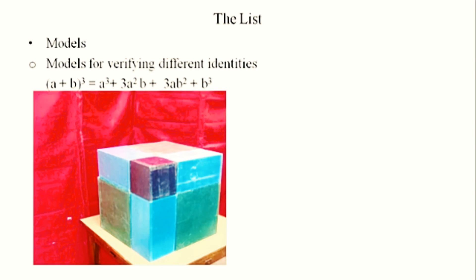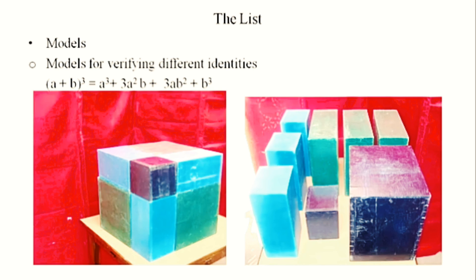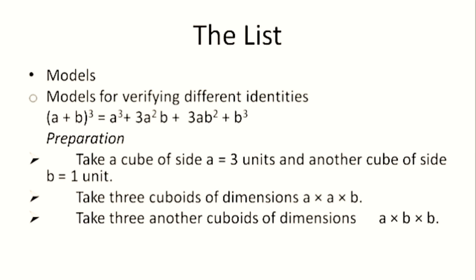We can have a model for (a + b)³ = a³ + 3a²b + 3ab² + b³. The volume of the resulting cube will be (a + b)³. When we bisect this cuboid and find the volume of each part, that gives us the identity (a + b)³ = a³ + 3a²b + 3ab² + b³. We do this by taking a cube of side a = 3 units, another cube of side b = 1 unit, three cuboids of dimensions a × a × b, and three cuboids of dimensions a × b × b.